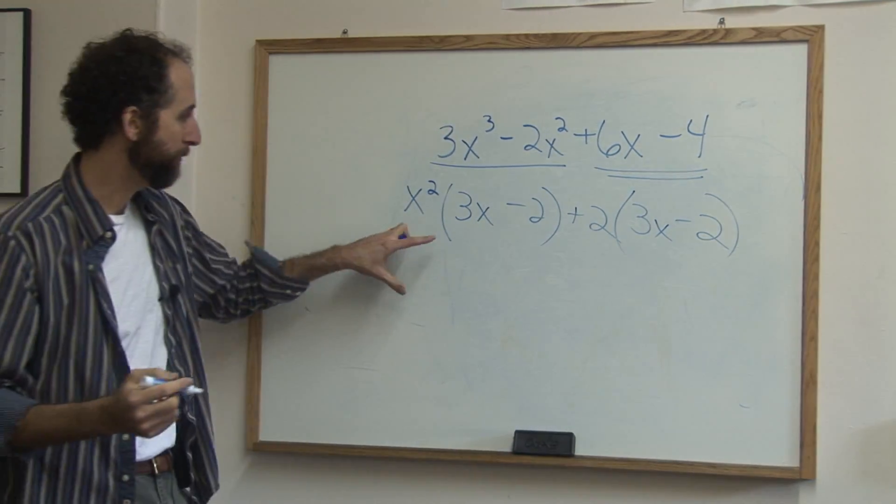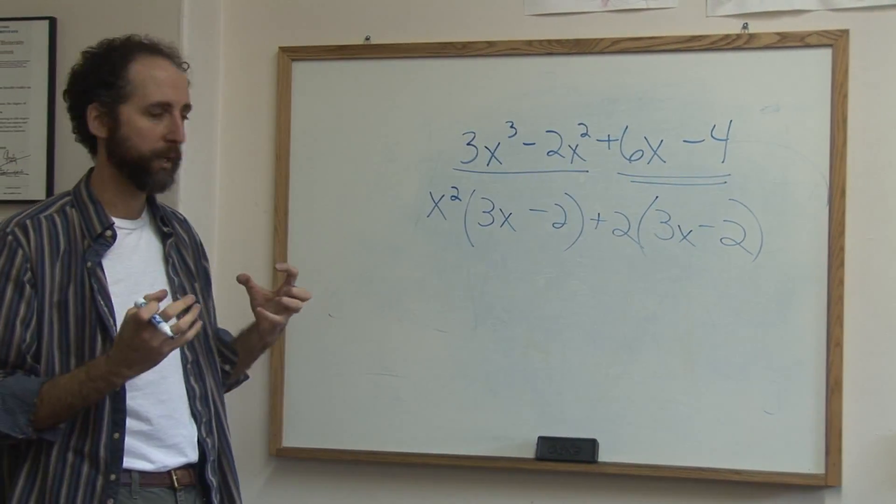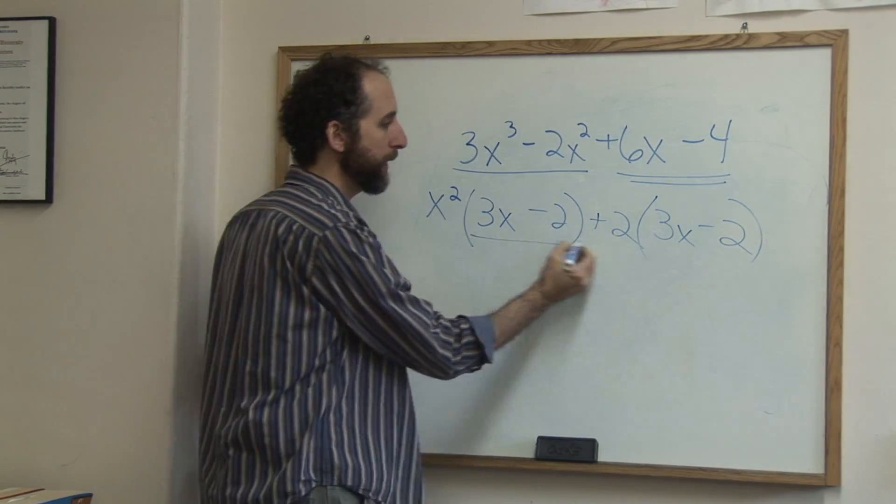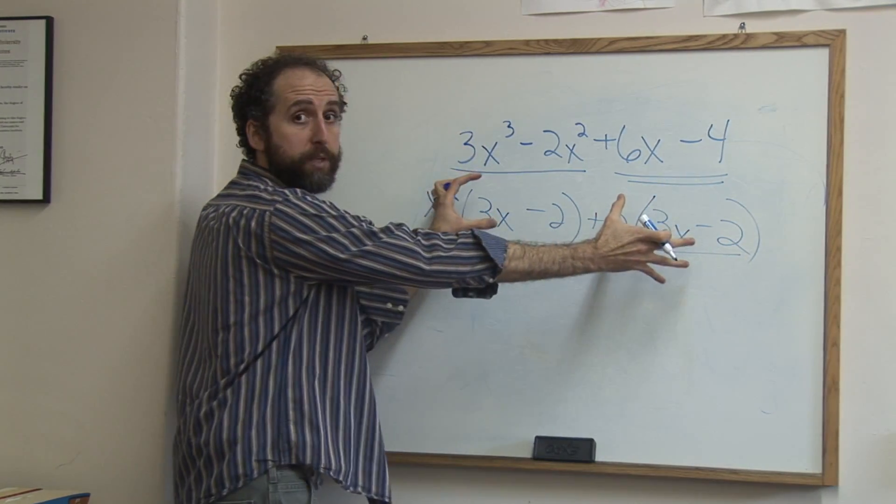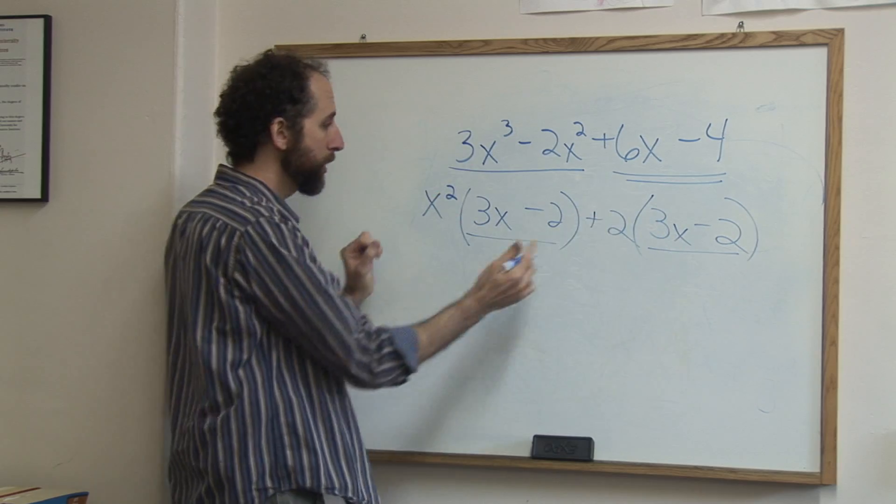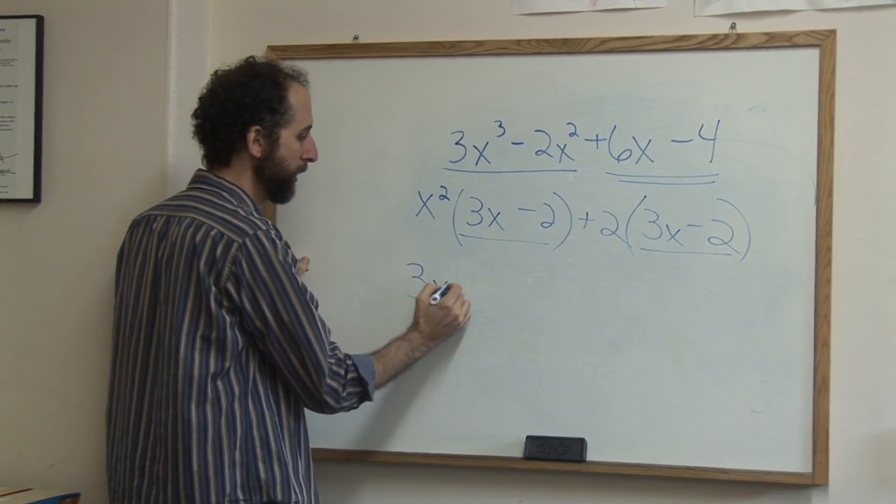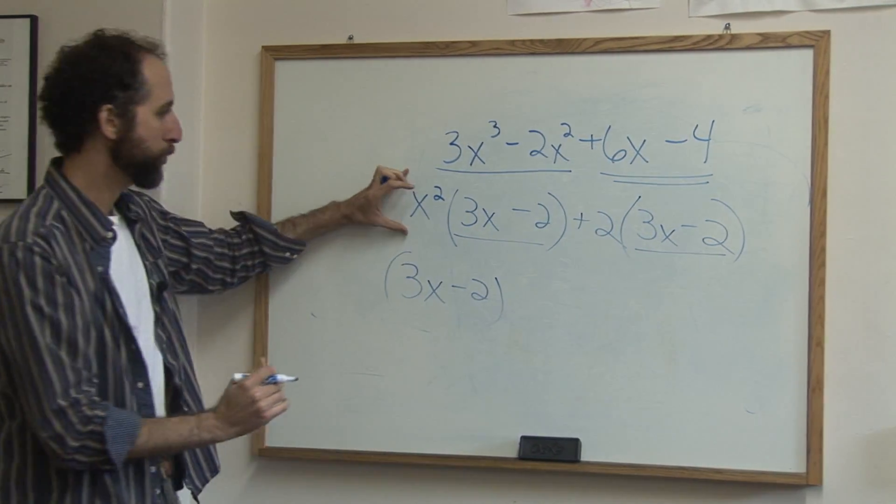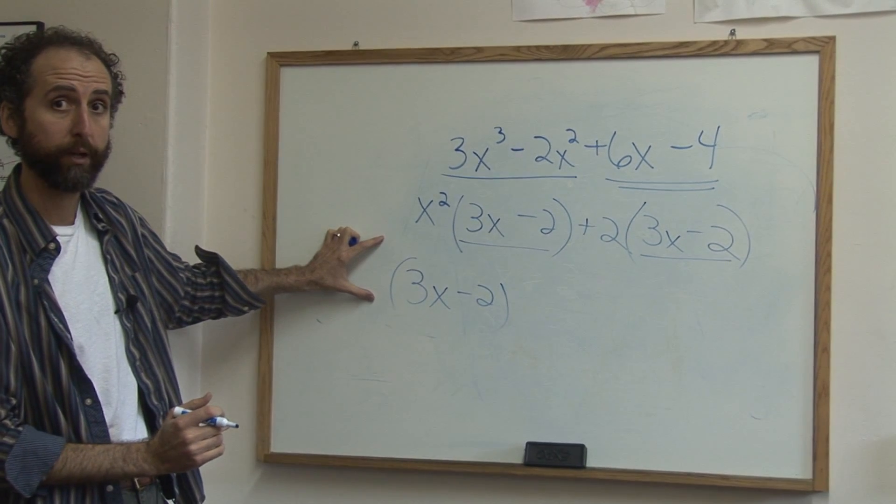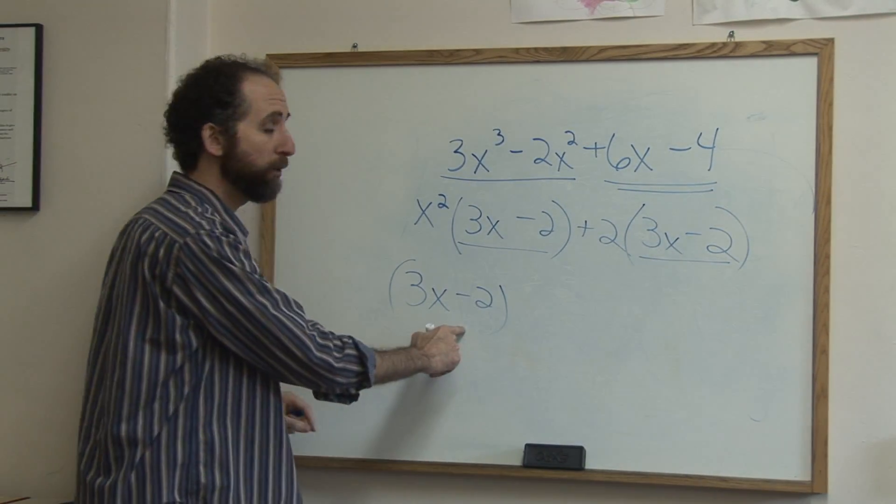Now I've factored each part. Now we're going to combine it. We're going to say, hey, this 3x minus 2 is in both these things now, both these parts. So we're going to actually factor it out. It's like a first round of factoring, second round of factoring. So we're going to pull this out of both parts.